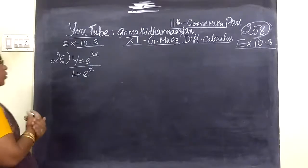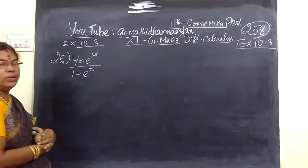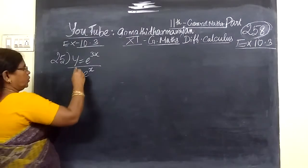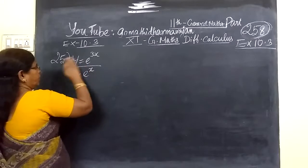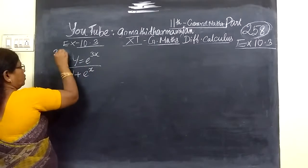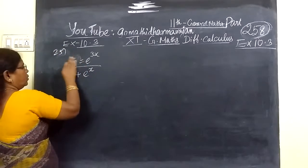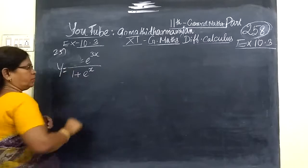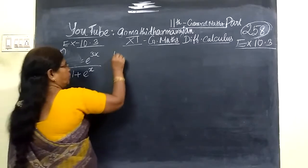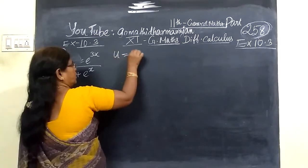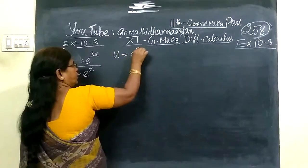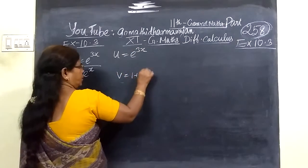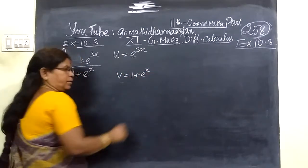The question number is 25. The question is Y equal to A, and we have given Y equal to B. The answer is U equal to E over VX and V equal to 1 plus V over N.